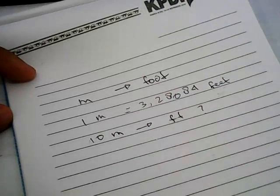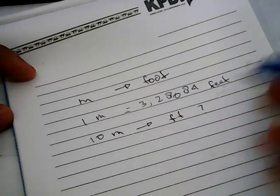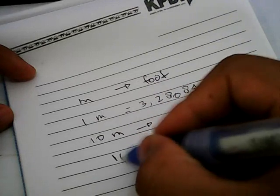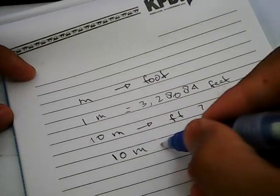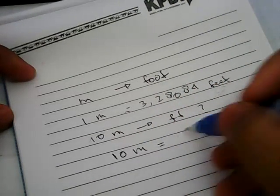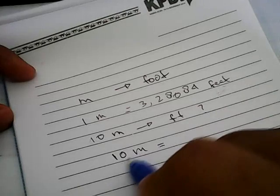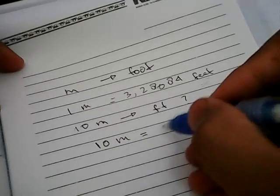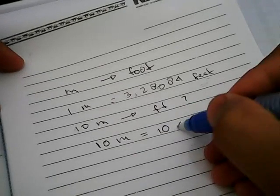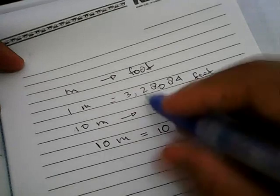The first thing you need to do is pull the 10 meters and give it an equal sign, and then pull this 10 over here again. I need to multiply this 10 with this number.